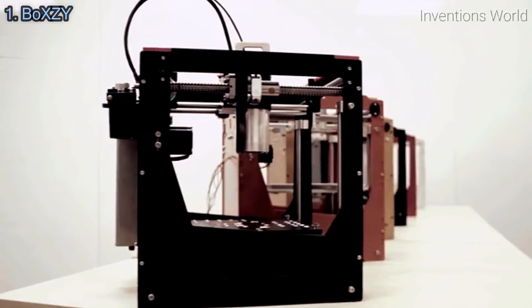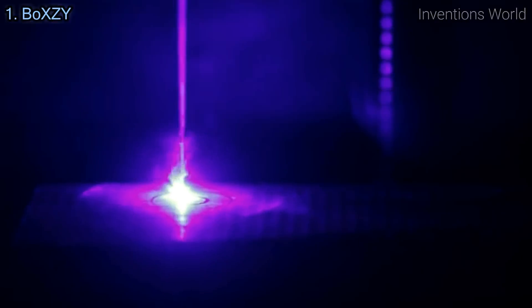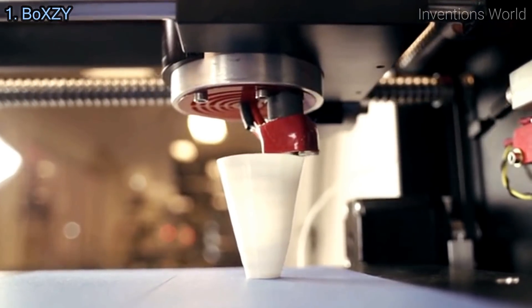Boxy is a desktop maker space bringing the power of a one and a quarter horsepower CNC mill, a laser cutter, and a 3D printer as an all-in-one machine.